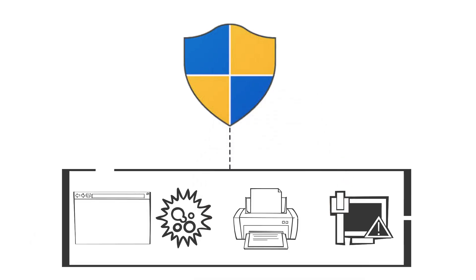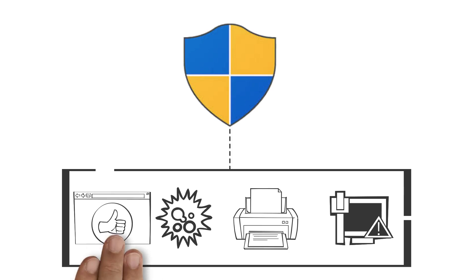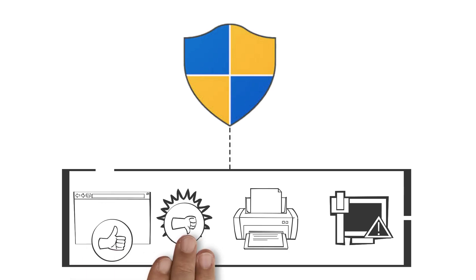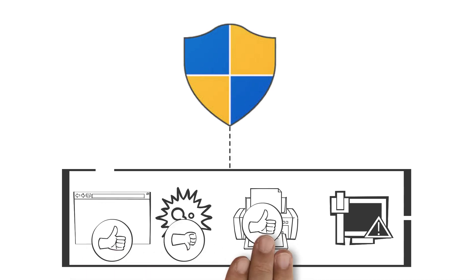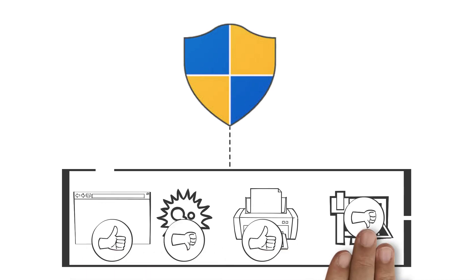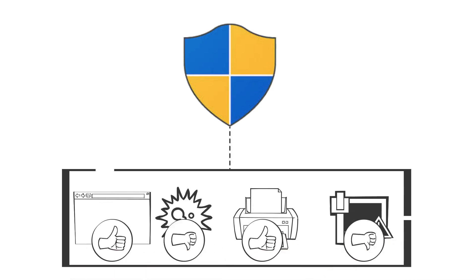When UAC is enabled, applications and processes can no longer automatically inherit admin privileges, and instead it will require approval from the end user when elevation is required. In order to do this,